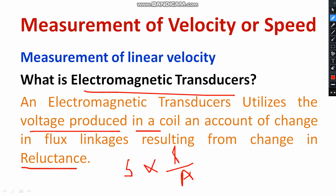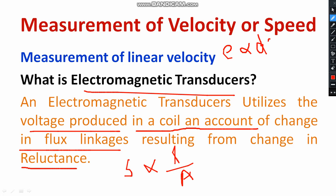Electromagnetic transducer operates based on the voltage produced — that means the induced EMF. The voltage produced in the coil is directly proportional to the flux linkage, which we can write as dΦ/dt. This is Faraday's laws of electromagnetic induction, and that results in the change in reluctance. This is the basic working principle of electromagnetic transducer — it works based on Faraday's laws of electromagnetic induction.